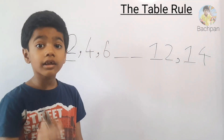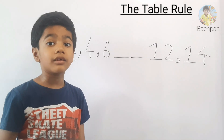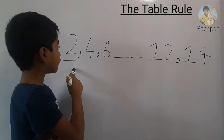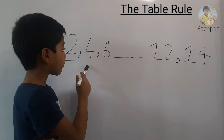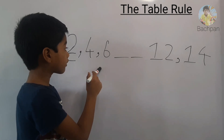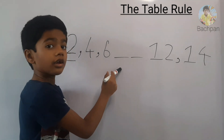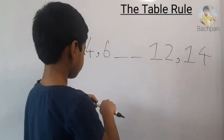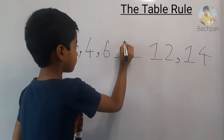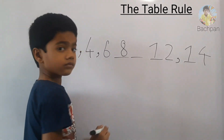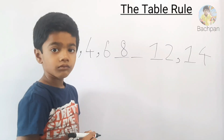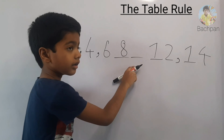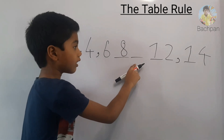Let's tell the table and write the answer. 2 ones are 2, 2 twos are 4, 2 threes are 6, 2 fours are 8 — so write 8 here. Next: 2 fours are 8, 2 fives are 10 — so write 10 here.